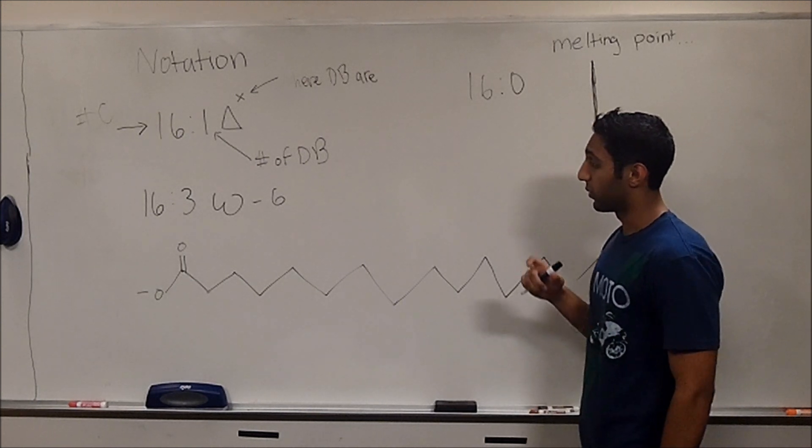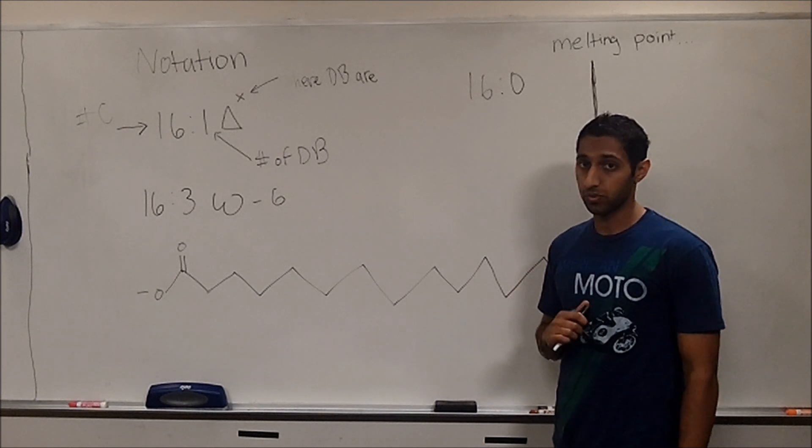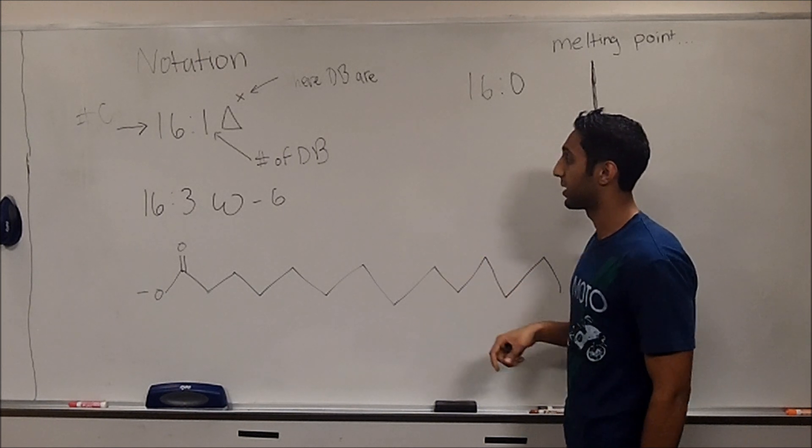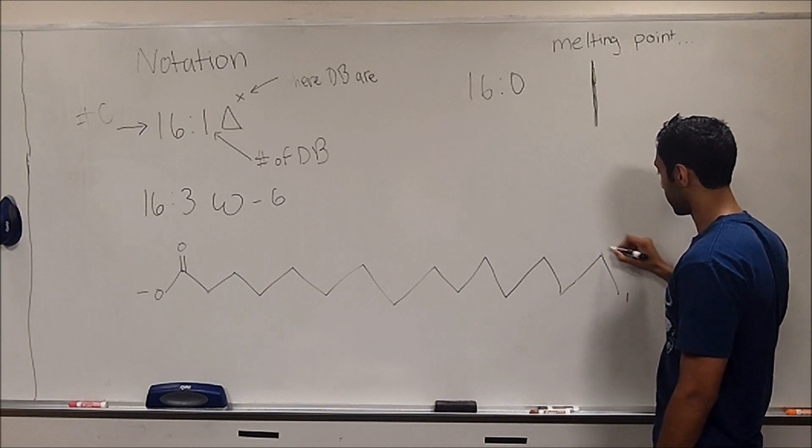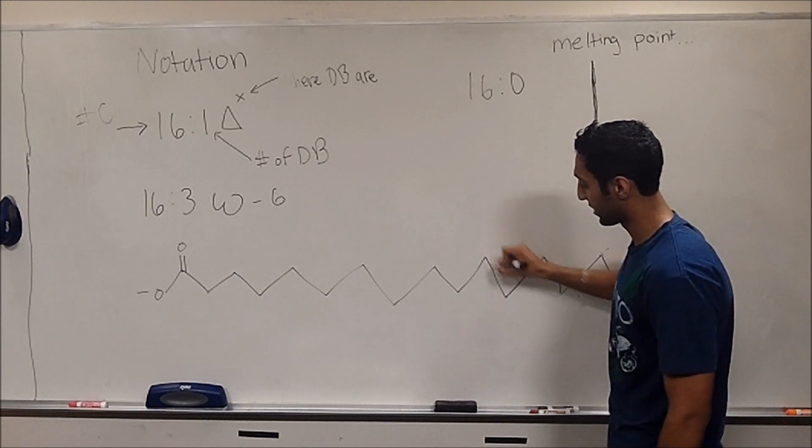Okay, so when we're trying to figure out where the double bonds would lie in an omega-6 fatty acid, you would start numbering from this side. So, 1, 2, 3, 4, 5, 6.